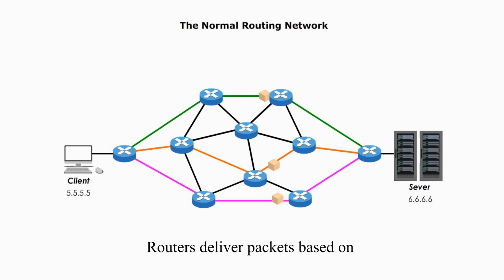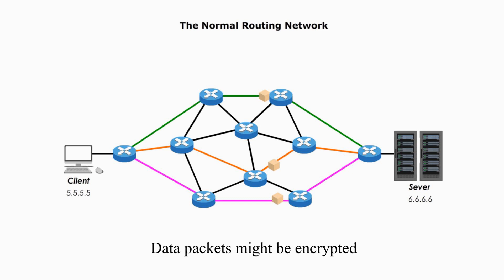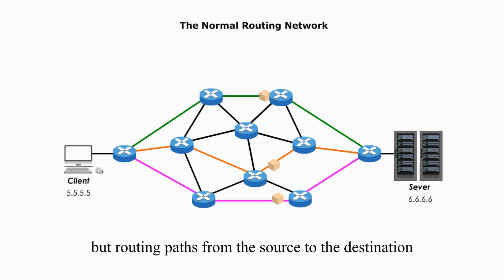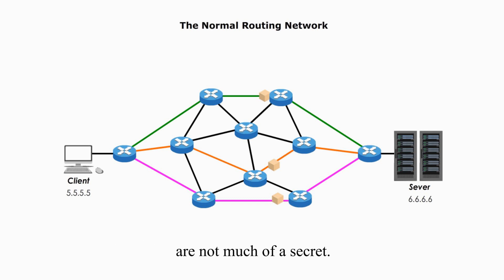Routers deliver packets based on the source and destination IP addresses. Data packets might be encrypted, but routing paths from the source to destination are not much of a secret.